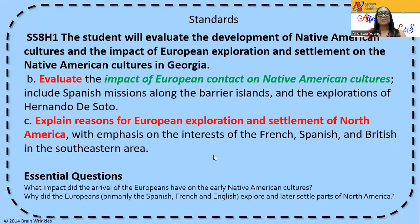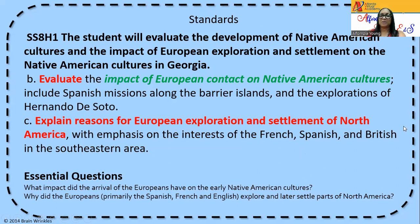Element B and Element C. Element B: evaluate the impact of European contact on Native American cultures, including Spanish missions along the barrier islands and the exploration of Hernando de Soto. Then Element C: explain reasons for European exploration and settlement of North America, with emphasis on the interests of the French, the Spanish, and British in the Southeastern area. The essential question: what impact did the arrival of the Europeans have on the early Native American culture, which was a bad impact? And why did the Europeans — primarily the Spanish, French, and English — explore and later settle parts of North America?